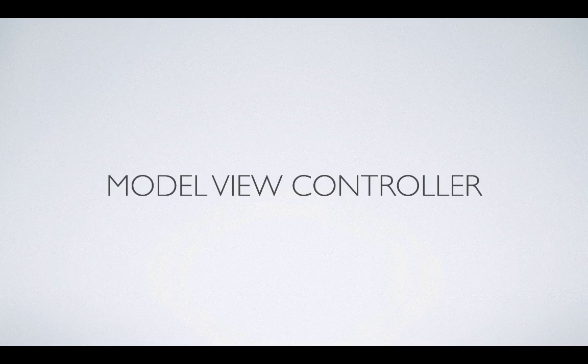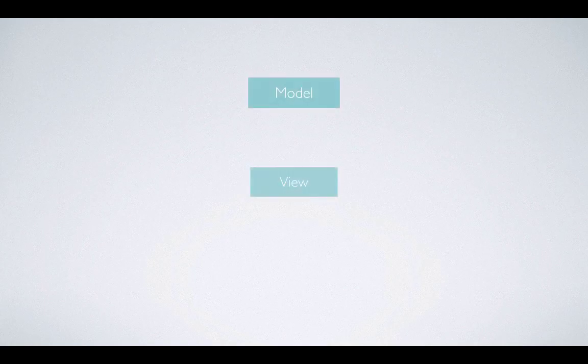Before diving into the implementation details, let's first understand what exactly is the Model-View-Controller pattern. The Model-View-Controller pattern consists of three different components: the Model, the View, and the Controller. Let's go ahead and see each of these different components a little bit more closely.